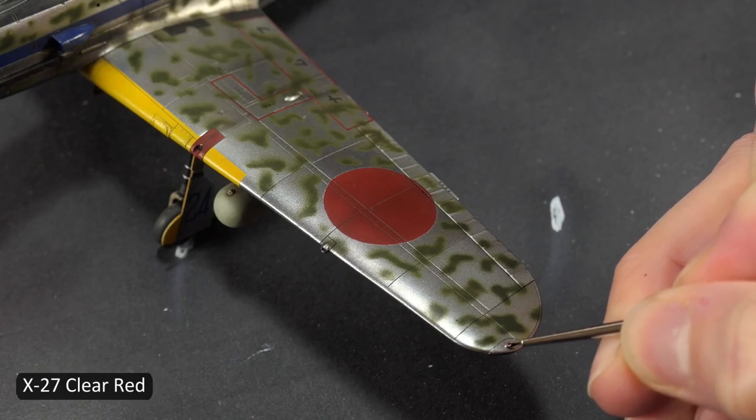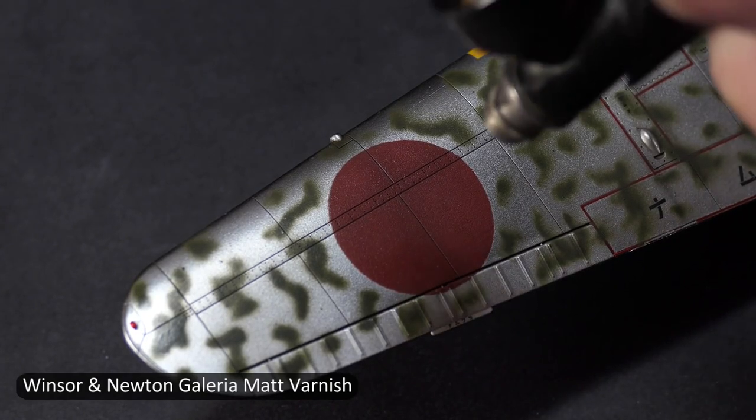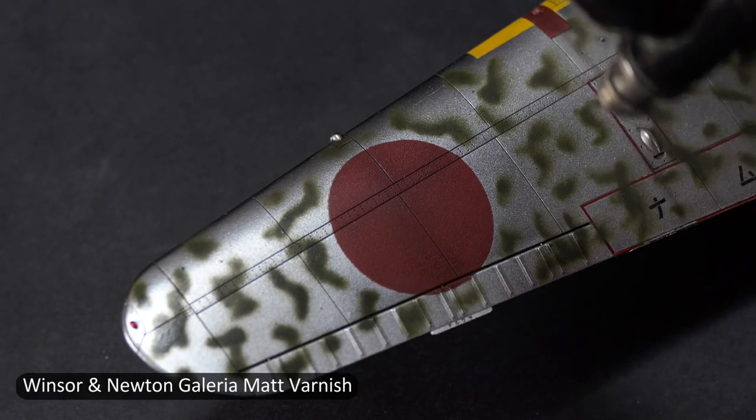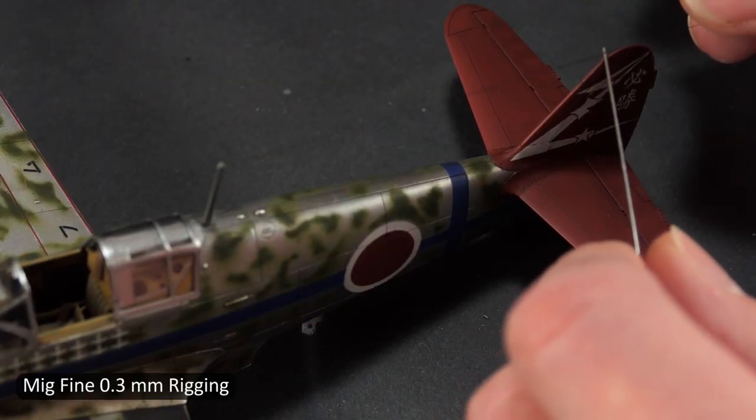I sealed all the colored areas with the matte varnish. That includes all the camo squiggles. Did I get a little bit of overspray on the metal finish? Probably. Does it bother me? No.